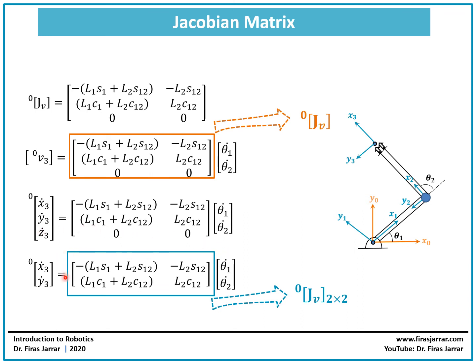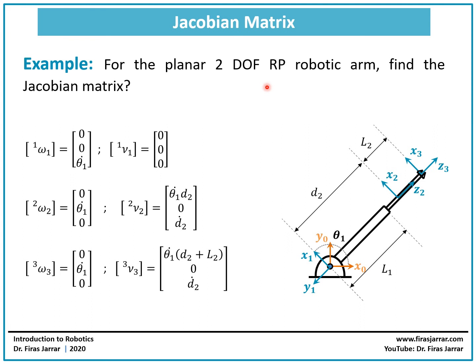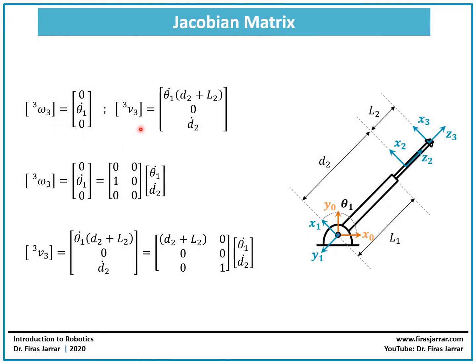We can eliminate the zero row to get the Jacobian expressed in frame 0 as a square 2x2 matrix. Now looking at another example: a revolute-prismatic robotic arm where we need to find the Jacobian matrix. It is again a two degrees of freedom planar robot, with a revolute joint and a prismatic joint. The two joint variables are theta 1 and d2. From a previous lecture, we found the angular and linear velocities of link 1, link 2, and the end effector. We now need to write the angular and linear velocity of the end effector as a product of two matrices containing the joint rates theta 1 dot and d2 dot.